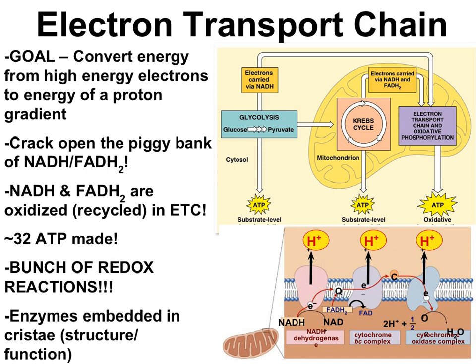So far, glucose has gone through glycolysis, the link reactions, and the Krebs cycle. During those processes, a lot of NADH and FADH2 was made. The goal of the electron transport chain is to deal with the NADH and FADH2.